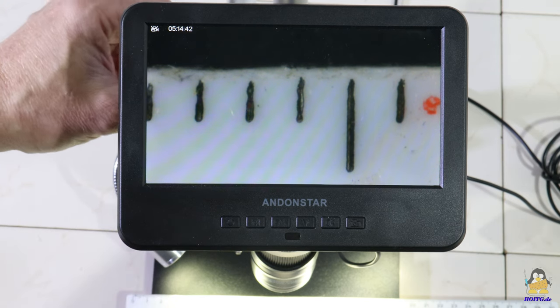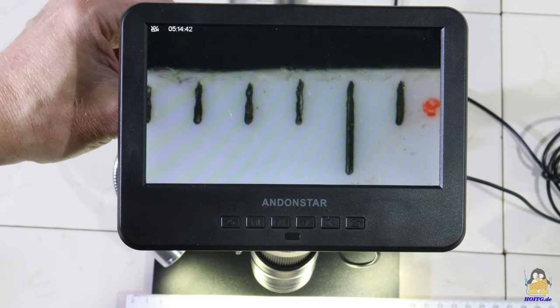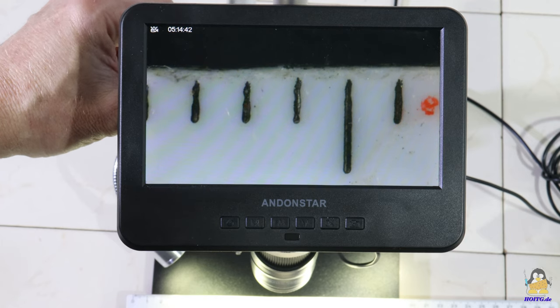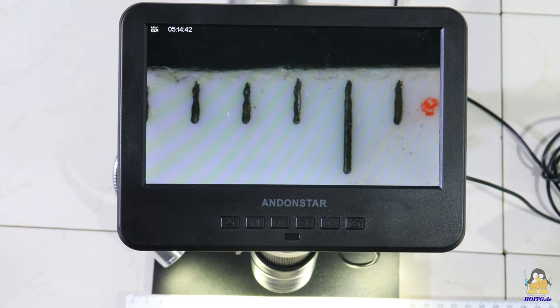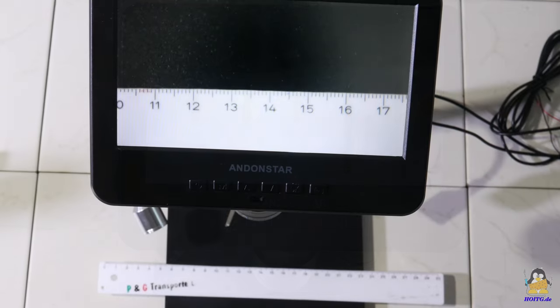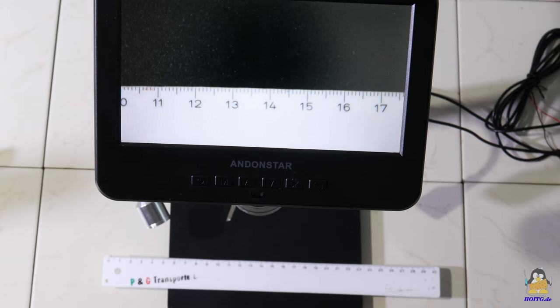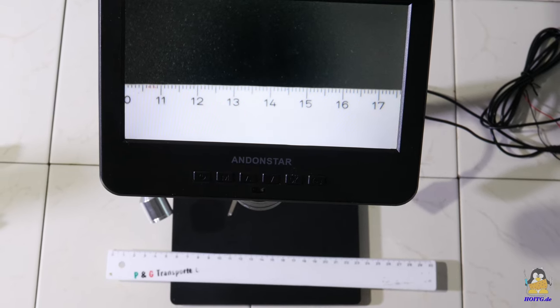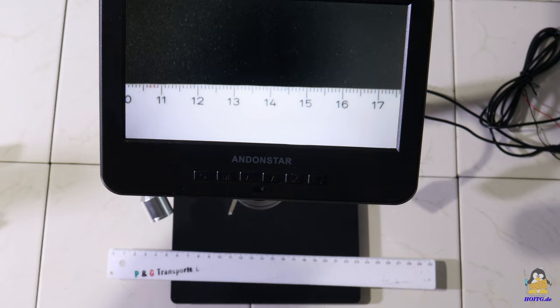At the minimum distance, only about 6mm of the ruler are displayed. With lens L, 76mm are captured at maximum height and so minimum magnification.